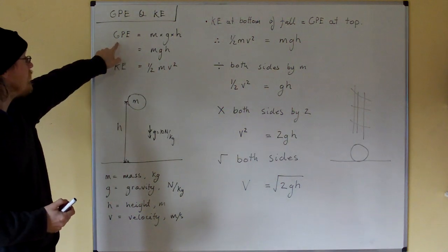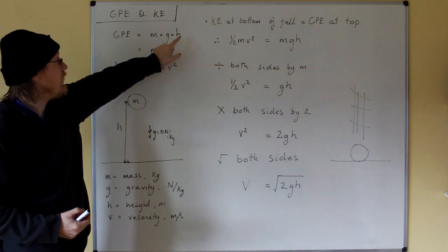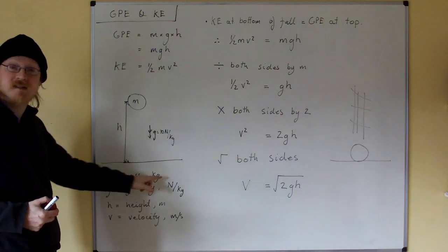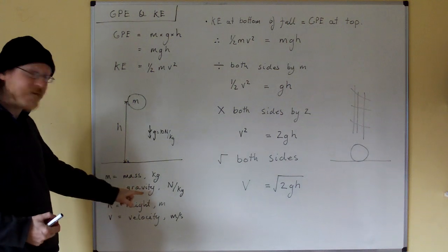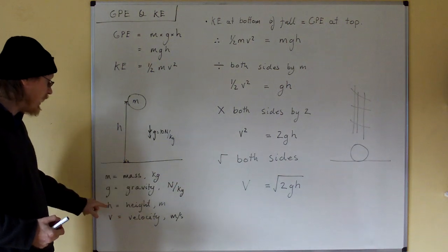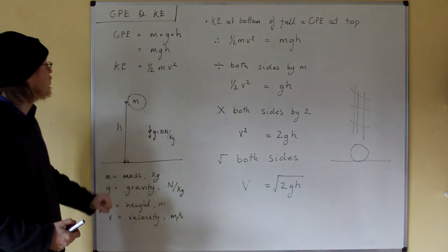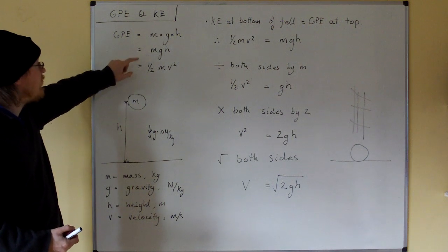Now, gravitational potential energy is equal to m times g times h, where m is the mass in kilograms, g is gravity in newtons per kilogram, and h is the height in meters. So gravitational potential energy is mgh.